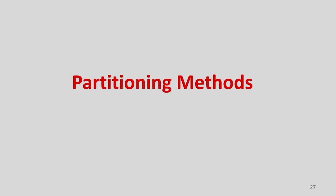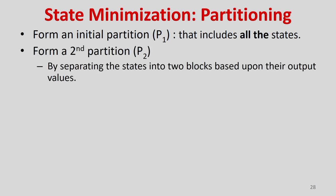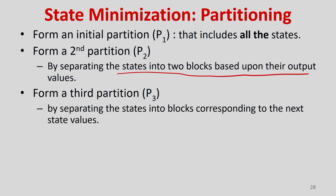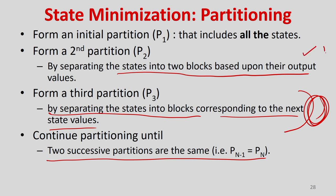The partitioning method is another approach, similar to row matching but we create sets and partition based on next state behavior and output behavior. The procedure: form an initial partition P1 including all states; form P2 by separating states into blocks based on output values; form P3 by separating state blocks based on next state values; continue until two successive partitions are the same.